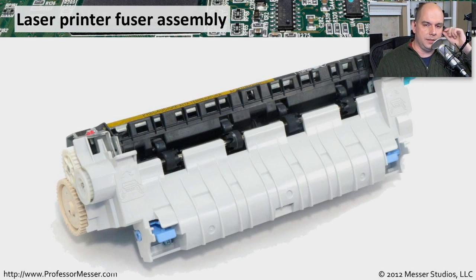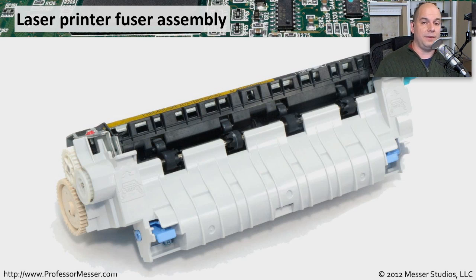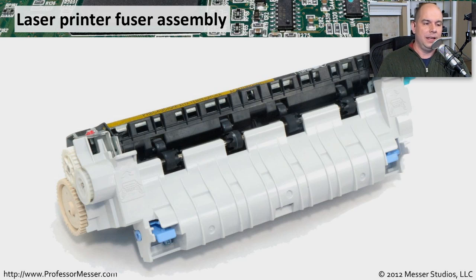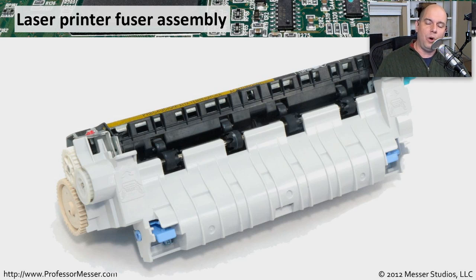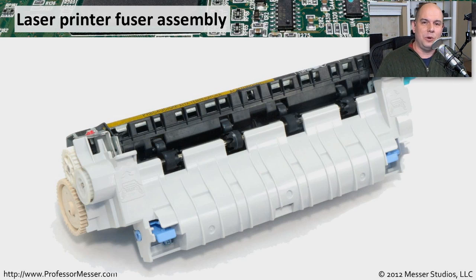Another component is the fuser assembly. The fuser takes the toner that's been placed on the paper and heats it up, melting and permanently fusing the toner to the page. There's a lot of heat involved as it rolls the paper through. If you feel laser printer output when it first comes out, it's a little warm — that's the fuser. If toner smears all over the page, you have a problem with the fuser assembly and will need to replace it.